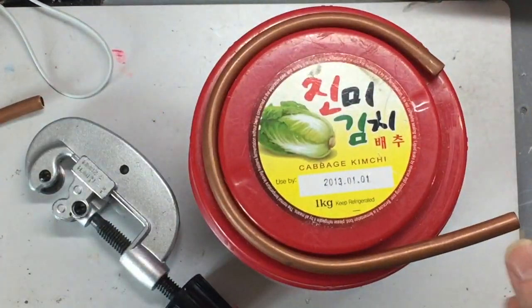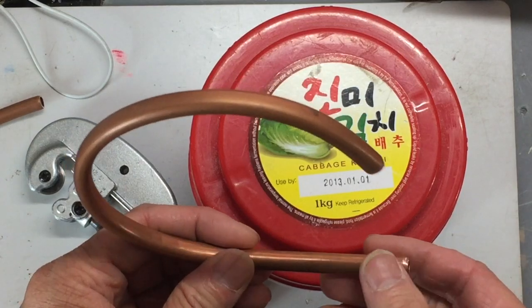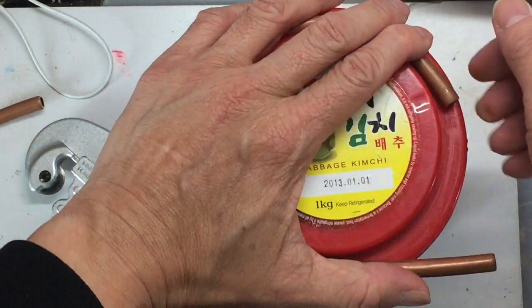After cutting out the extra pipe that you don't need, mount it on the mold again and try to smooth it out to make this C shape.